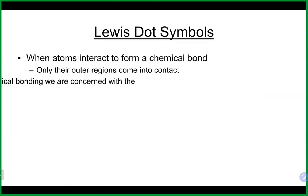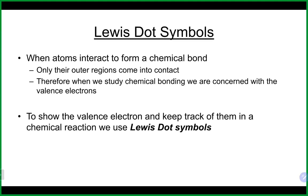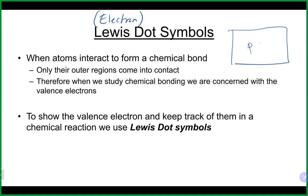The last thing we're going to talk about are Lewis dot symbols, also called electron dot symbols. They're used, as we'll talk about in the next chapter, to demonstrate both types of bonding. What they really are is just a symbol with one dot to represent each of the valence electrons an atom has. The easiest way to get your valence electrons is from the periodic table — it equals the group number.